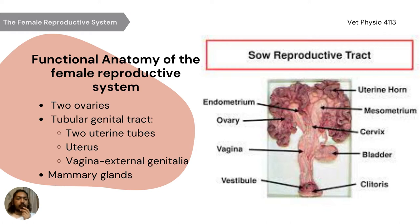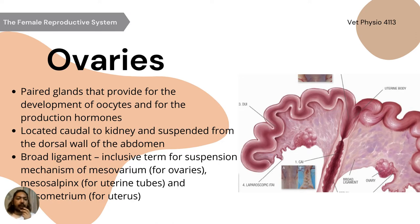The functional anatomy of the female reproductive system consists of two ovaries, the tubular genital tract — which consists of the two uterine tubes, uterus, and the vagina, which is the external genitalia — and mammary glands. The ovaries are paired glands that provide for the development of oocytes and for the production of hormones, particularly estrogen and progesterone. They are located near the caudal kidney and suspended from the dorsal wall of the abdomen. The broad ligament is divided into the mesometrium, which is the largest portion, the mesosalpinx — the mesentery of the uterine tube or the fallopian tube — and the mesovarium, which connects the ovaries to the broad ligament.